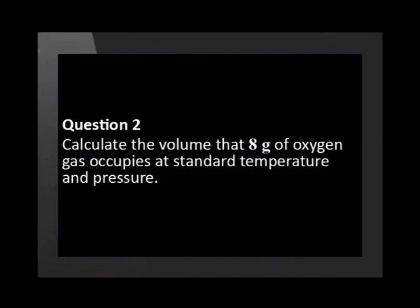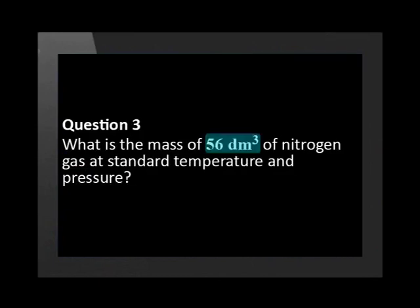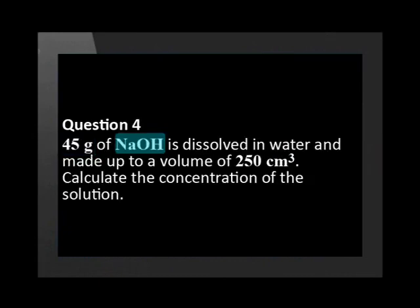What is the mass of 56 decimeters cubed of nitrogen gas at standard temperature and pressure? 45 grams of NaOH dissolved in water and made up to a volume of 250 centimeters cubed, calculate the concentration of the solution.